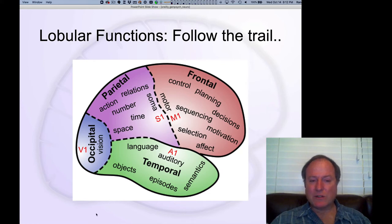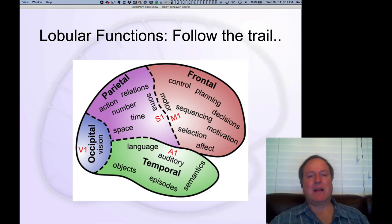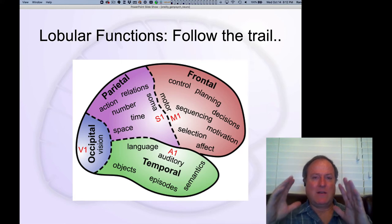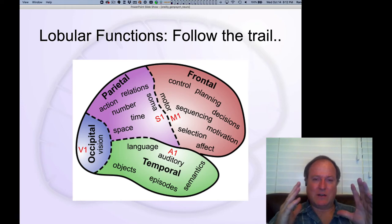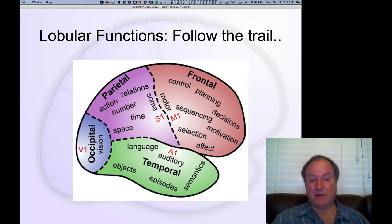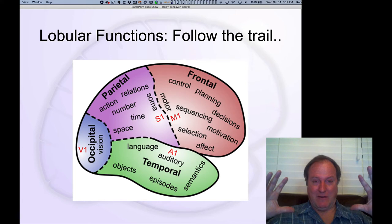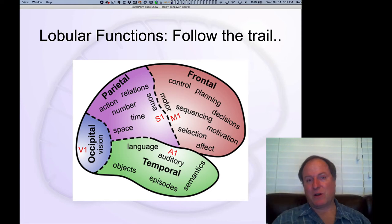Most of the occipital lobe in the very back of your head is devoted to processing visual information. V1 is the lowest level in the hierarchy of visual areas — a huge amount of brain tissue devoted to detecting oriented edge detectors. That's pretty much what it does, at a very large scale, taking a huge amount of visual information and compressing it into a much more compact, systematic encoding of our visual world.